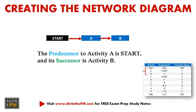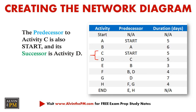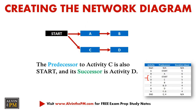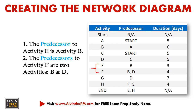Moving along, we see that the predecessor to activity C is also Start and its successor is activity D. Here's the updated network diagram — as you can see, we're slowly starting to build out the network diagram. Let's move along to the next two rows in the table.